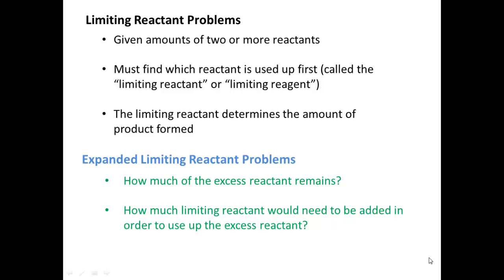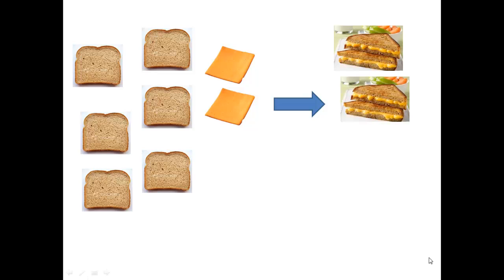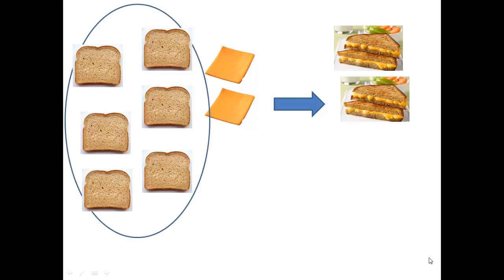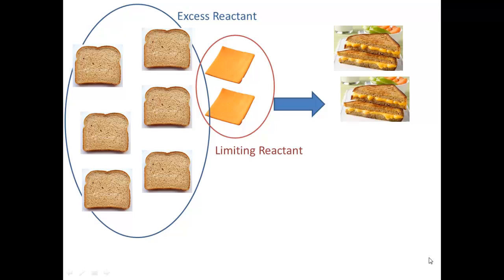In order to visualize these questions, let's remind ourselves of the limiting reactant problem we introduced in the last video. We talked about grilled cheese sandwiches, where two pieces of bread and one piece of cheese makes a grilled cheese sandwich. In our limiting reactant problem, we had six pieces of bread, two pieces of cheese, and we determined that these would produce two sandwiches. Our excess reactant is the bread, and our limiting reactant is the cheese.